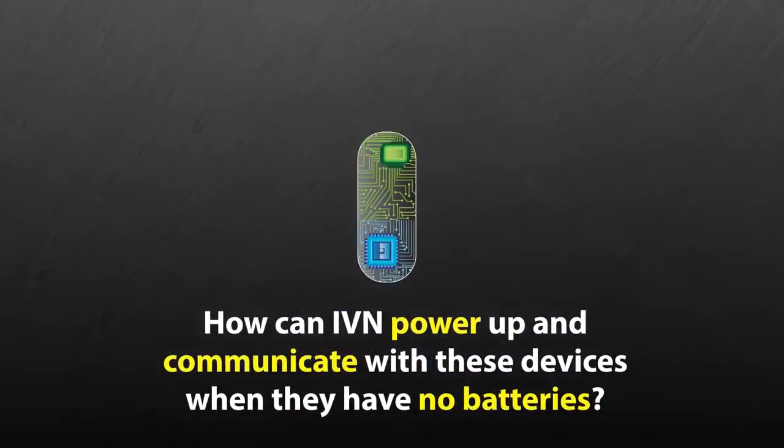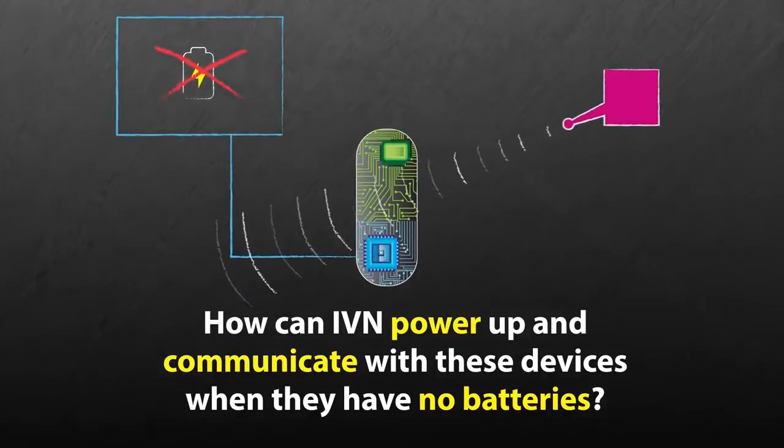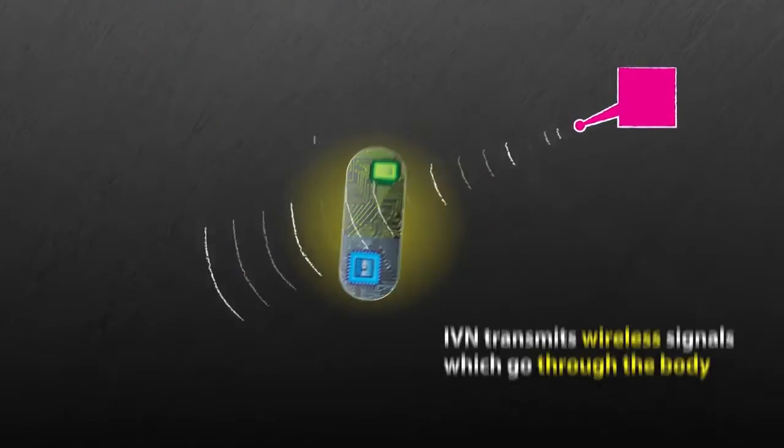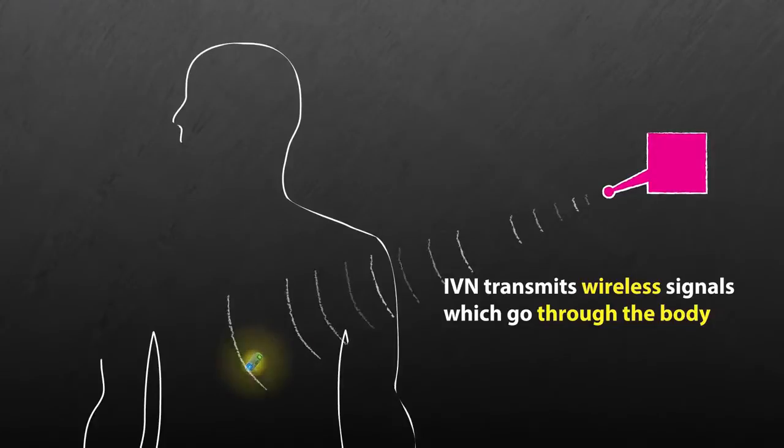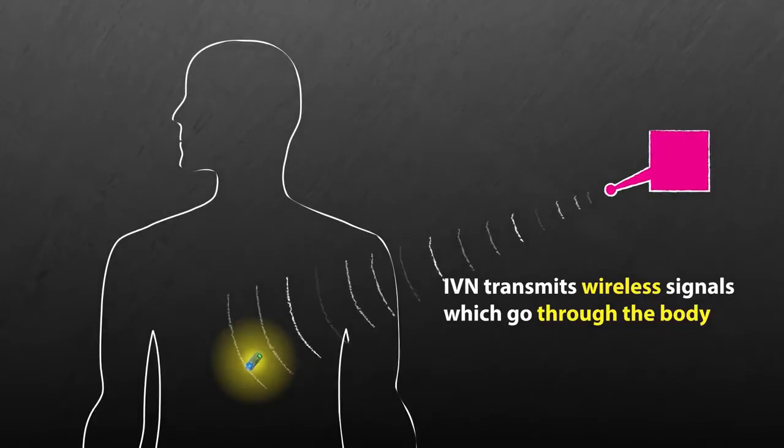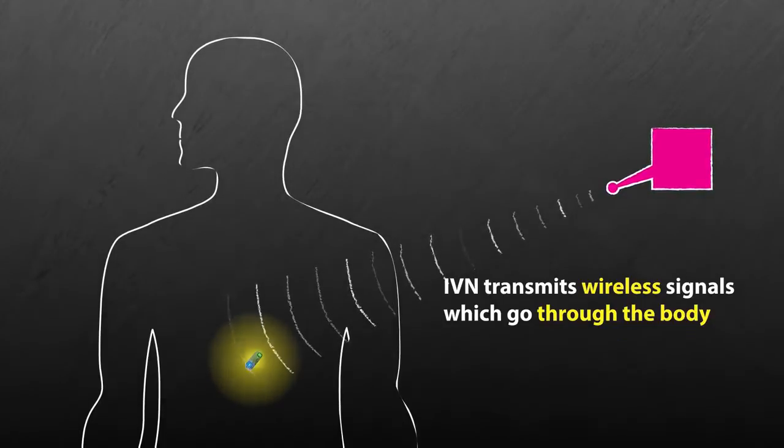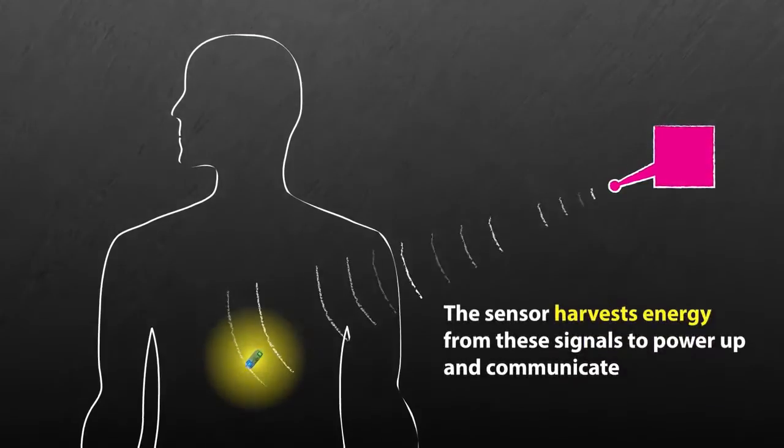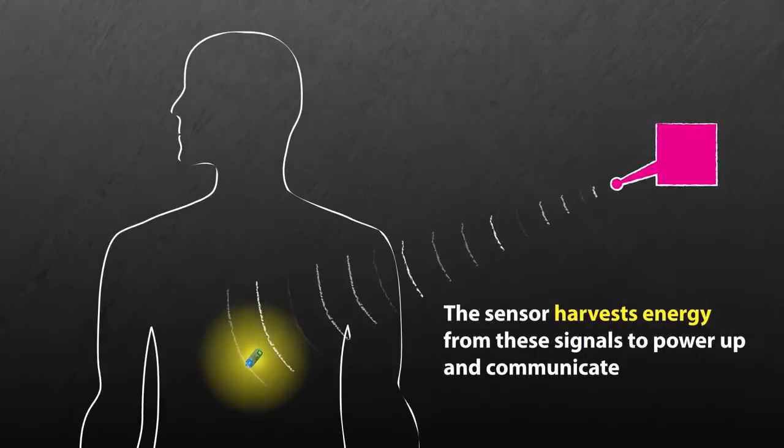How can IVN power up and communicate with these devices when they have no batteries? When IVN transmits a wireless signal, the signal goes through the body and reaches the tiny implanted sensor. The sensor harvests energy from these signals to power up and communicate.